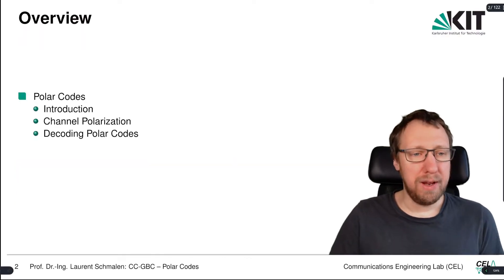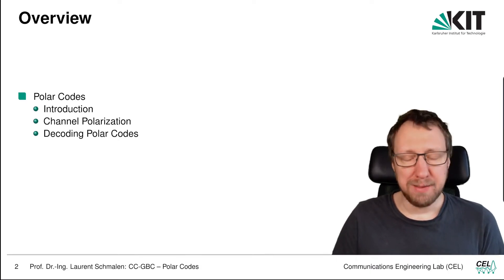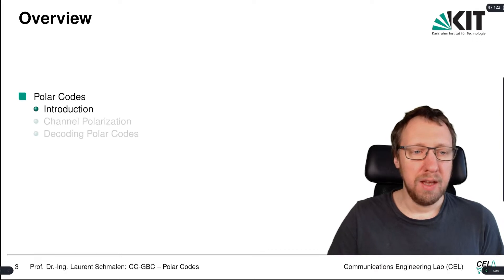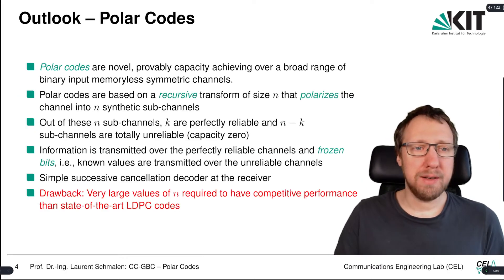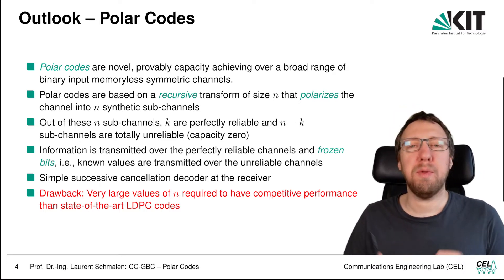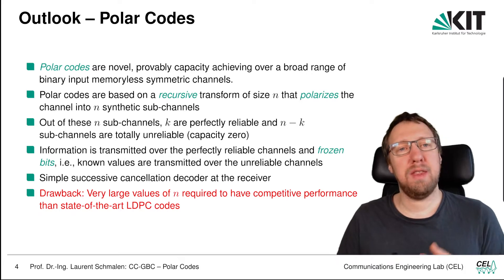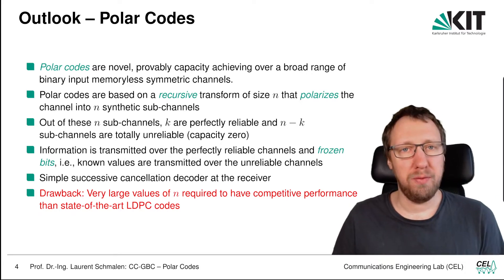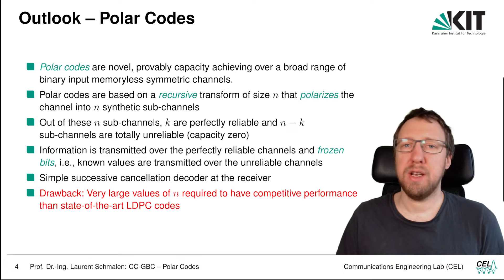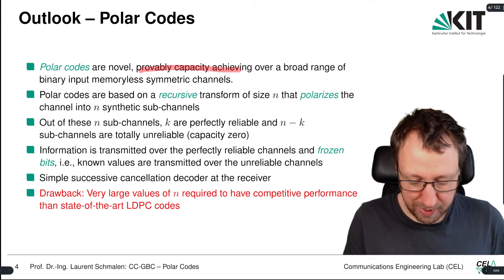We are going to look very briefly into polar codes in this lecture, especially at three aspects, so that you have at least an understanding of the basics. Polar codes are novel in the respect that they are quite different from the block codes we're used to. They work on a very different principle, and they essentially come from an information theory point of view as a tool to show that there exist coding schemes other than random codes that are capacity achieving. We can prove that polar codes are capacity achieving.